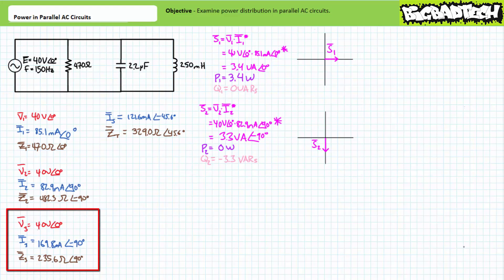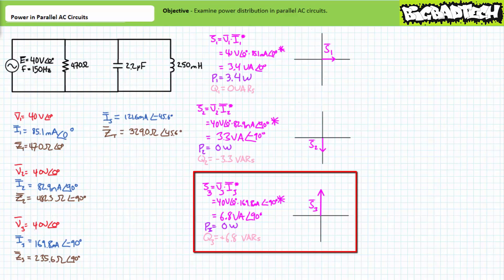Let's now examine the inductive impedance Z3. Current through the inductor lags the voltage across it by a relative 90 degrees. For this purely inductive element, we should expect all of apparent power to be directed towards a reactive interchange. Apparent power is the complex conjugate of voltage times current. Substituting in our values, we arrive at an apparent power figure of 6.8 volt amperes at an angle of 90 degrees. Resolving this into its real and reactive components demonstrates the inductor is directing zero watts towards real power and 6.8 VARs towards a reactive interchange, as anticipated given the entirely reactive nature of an inductor. Note the complex conjugate operation accounts for the positive reactive power sign. Although I personally loathe this terminology, you'll sometimes hear people referring to an inductor as absorbing reactive power.